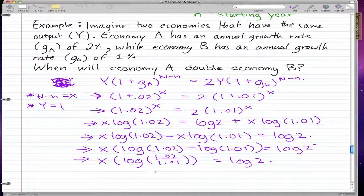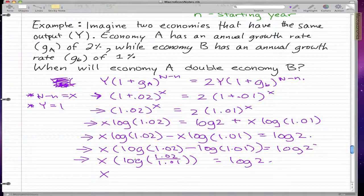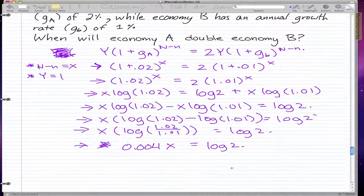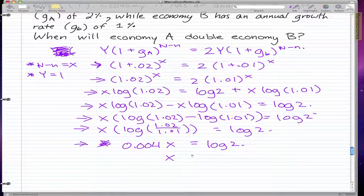If you plug this into your calculator, you get something like 0.004, so X equals log 2. Then, if we divide by 0.004 on both sides, we have X equals log 2 over 0.004, and you'll get X is approximately 70.